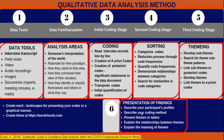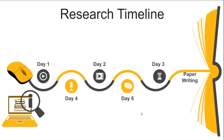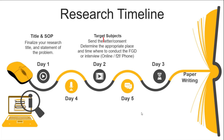Before I end my presentation, allow me to present this suggested research timeline. If you plan to undergo a simple qualitative study, then for day one, we must first finalize your research title and statement of the problem. On day two, we must finalize your target subjects and give them a letter of permission asking consent for their voluntary participation, as well as consent to record or take photos for documentation purposes. We must explain to the participants that all information collected will be treated with utmost confidentiality. Once they agree, we determine the appropriate place and time to conduct the FGD or interview.